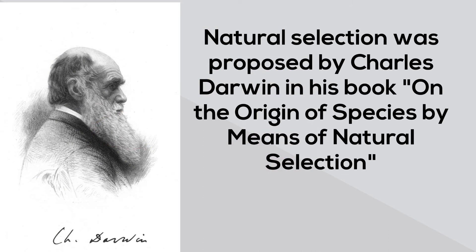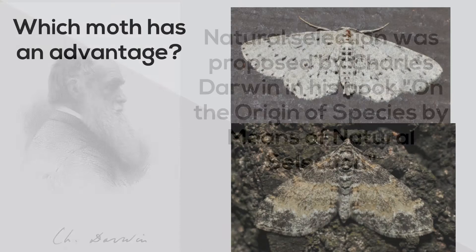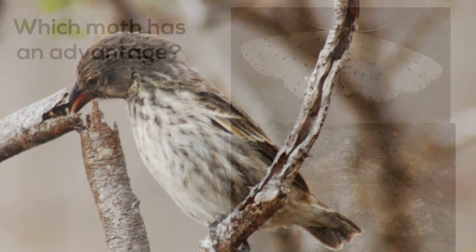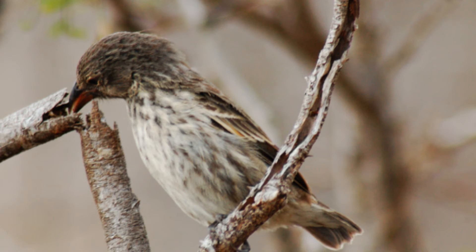Next, natural selection states that some organisms are better suited for their environment than others. They have a better chance of surviving and passing this genotype to their offspring. For example, they may be on an island where a narrow, long beak may be superior to a flat beak.